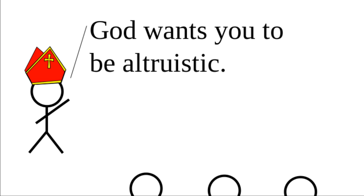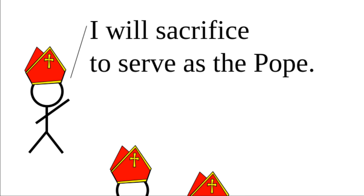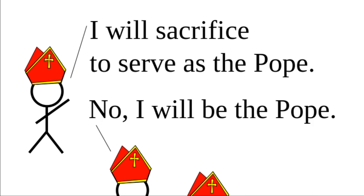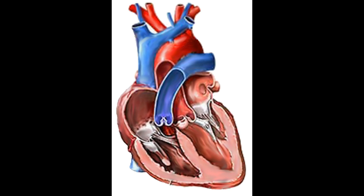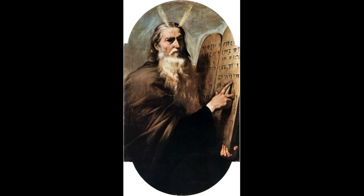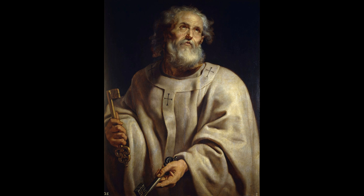Unfortunately, two problems have always prevented religion from building altruistic societies. First, they have rarely been able to persuade everyone to both believe and act on that belief. And second, an altruistic society requires more than altruistic desire — it also requires organization. For example, consider a heart cell that is willing to do whatever job is needed for the benefit of the body. No matter how altruistic its intentions, that heart cell would never be very helpful if it thought that its job was to grow hair. Hence, every human effort to establish a Zion or a utopian society has revolved around some prophet, visionary, or party whose role was to direct the altruistic efforts of the participants.